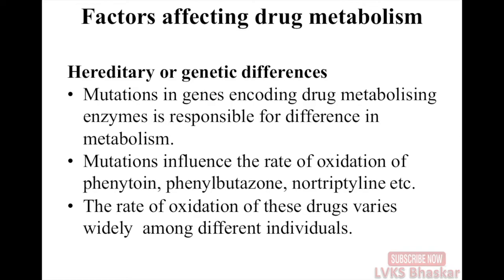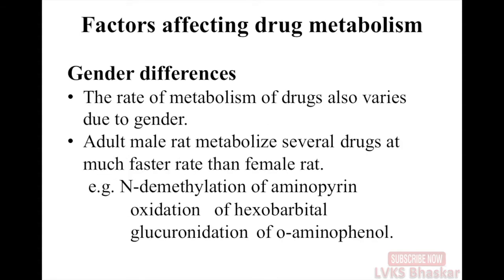Hereditary and genetic differences also play a role. Mutations in genes encoding drug metabolic enzymes are responsible for differences in metabolism. These mutations influence the rate of oxidation of phenytoin, phenylbutazone, and nortriptyline. The rate of oxidation of these drugs varies widely among individuals. Regarding gender differences, adult male rats metabolize several drugs at a much faster rate than female rats — for example, N-demethylation of aminopyrine, oxidation of hexobarbital, and glucuronidation of o-aminophenol.